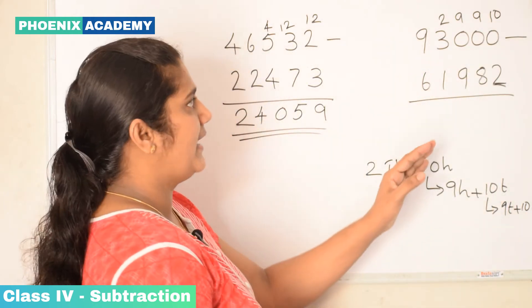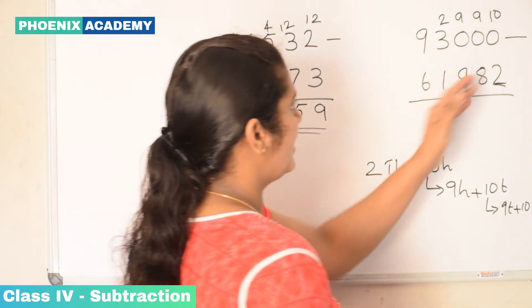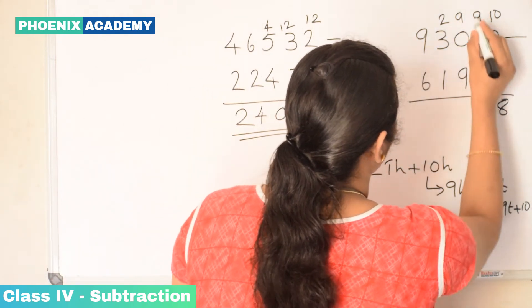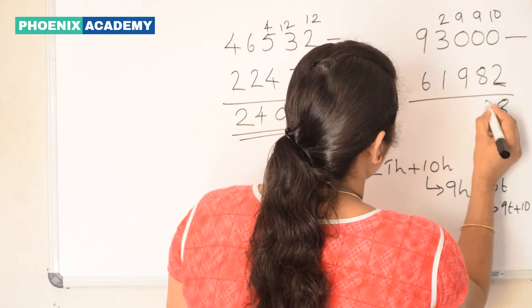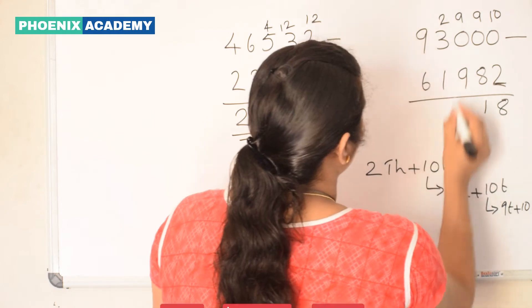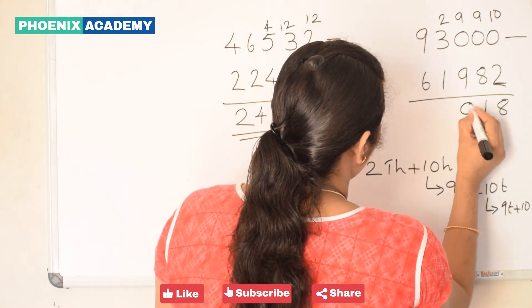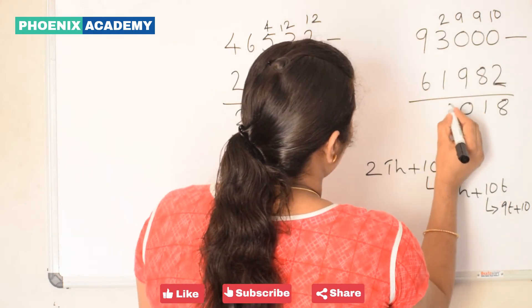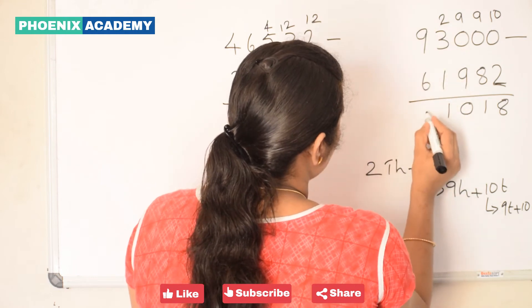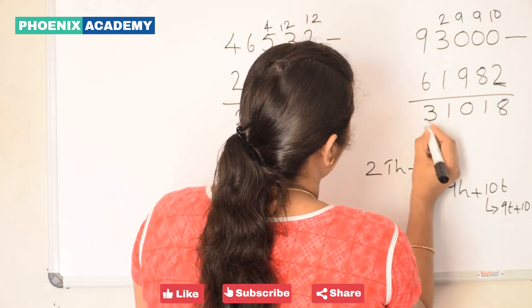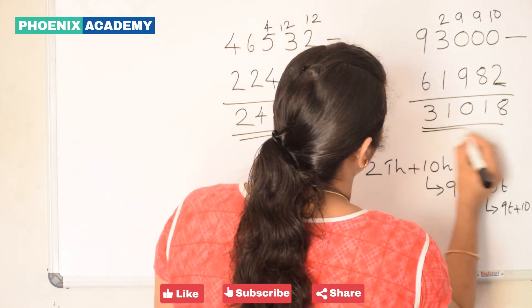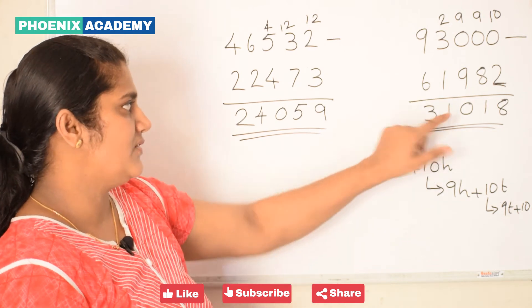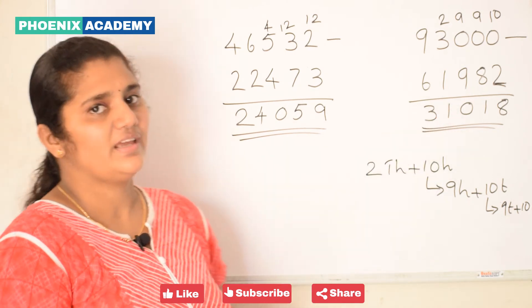Now we can subtract. 10 minus 2 is 8. 9 minus 8 is 1. 9 minus 9 is 0. 2 minus 1 is 1. 9 minus 6 is 3. The difference is 31,018.